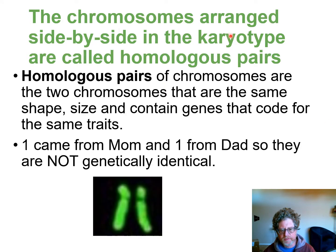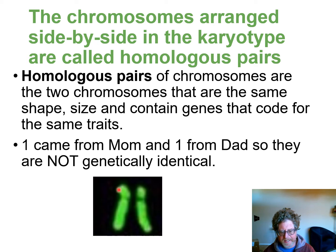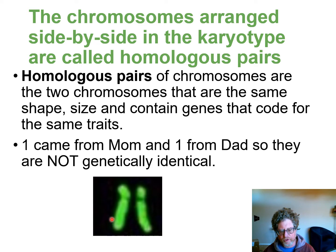When chromosomes are displayed in a karyotype, they're shown in pairs called homologous pairs. Homologous pairs are the same size, the same shape, and contain genes coding for the same traits — but they're not identical, because one came from dad and one came from mom. For example, dad gave you a gene for eye color, but it may or may not match mom's gene for eye color.